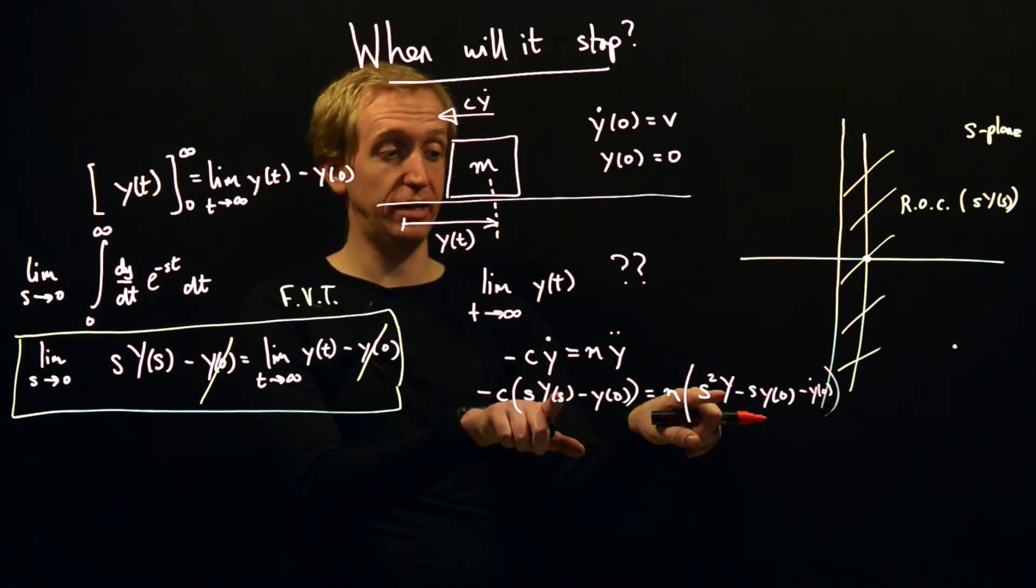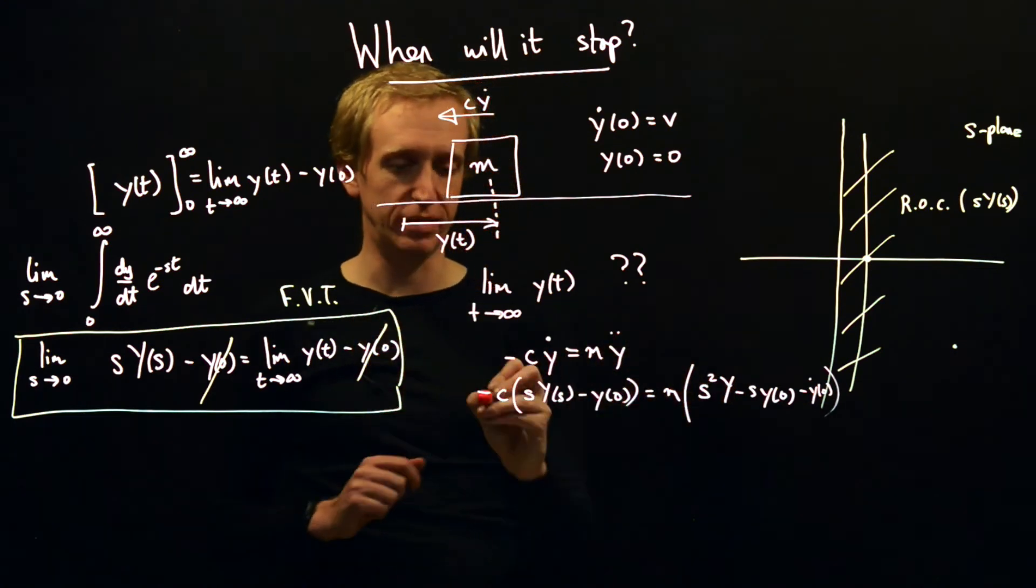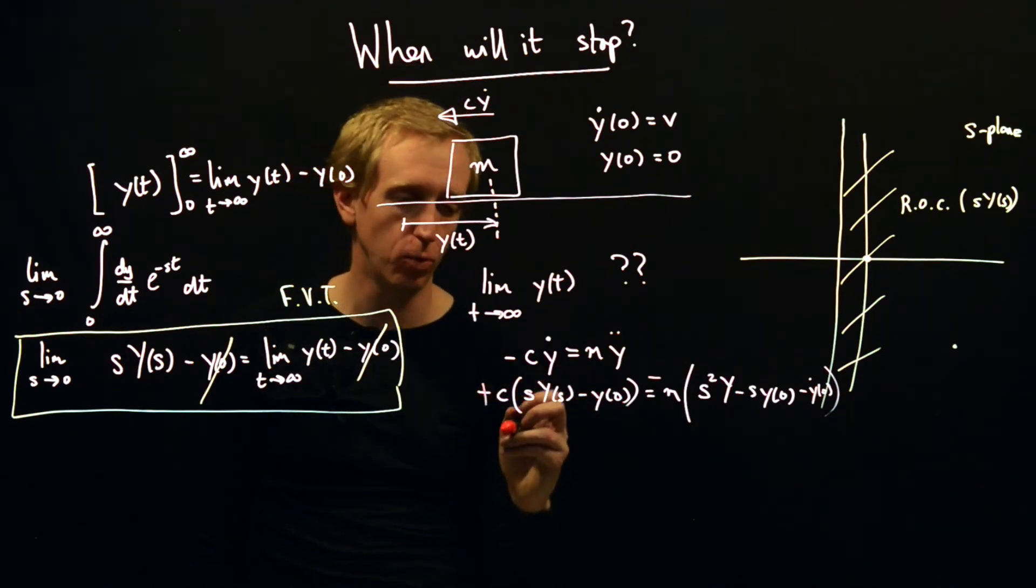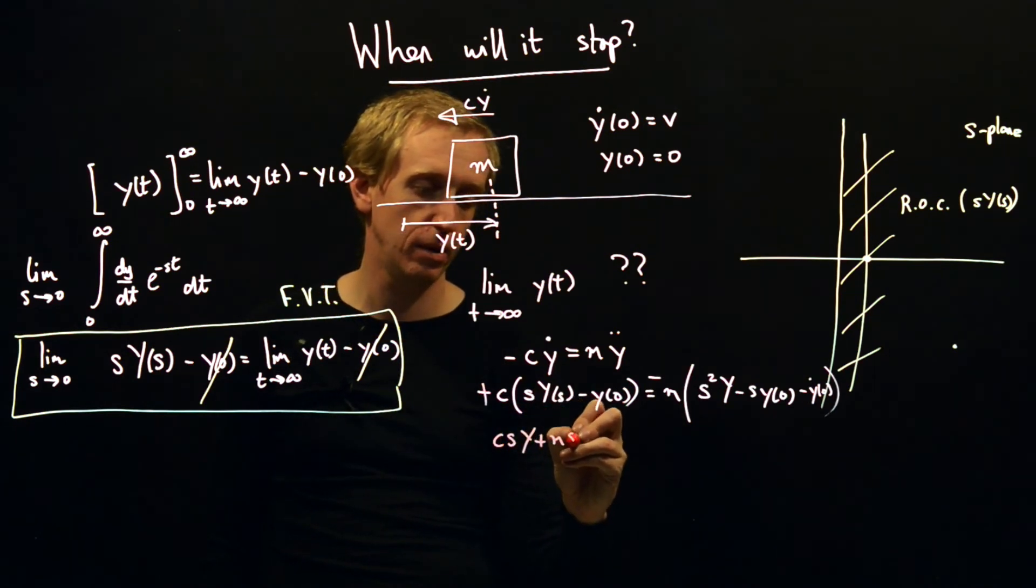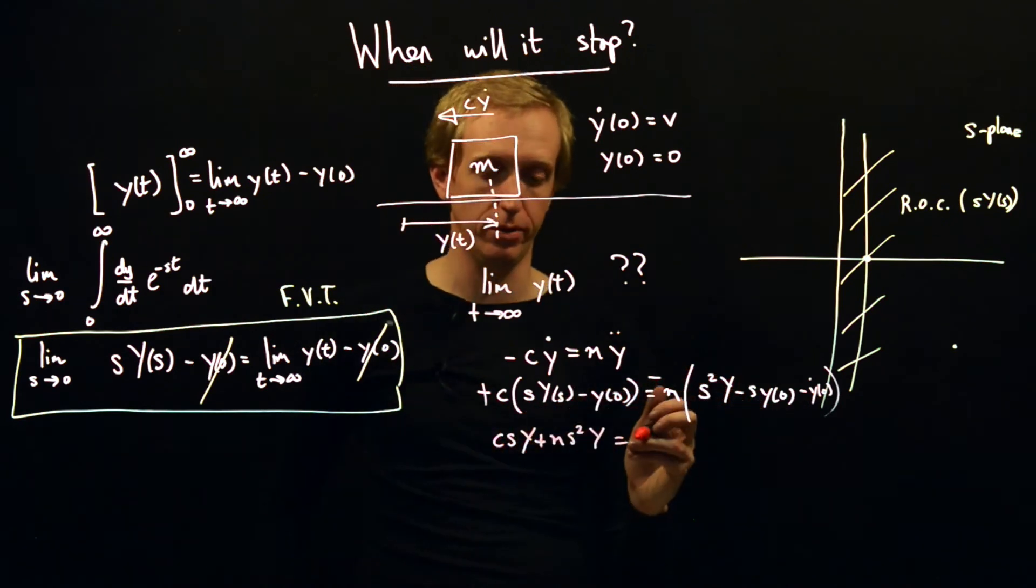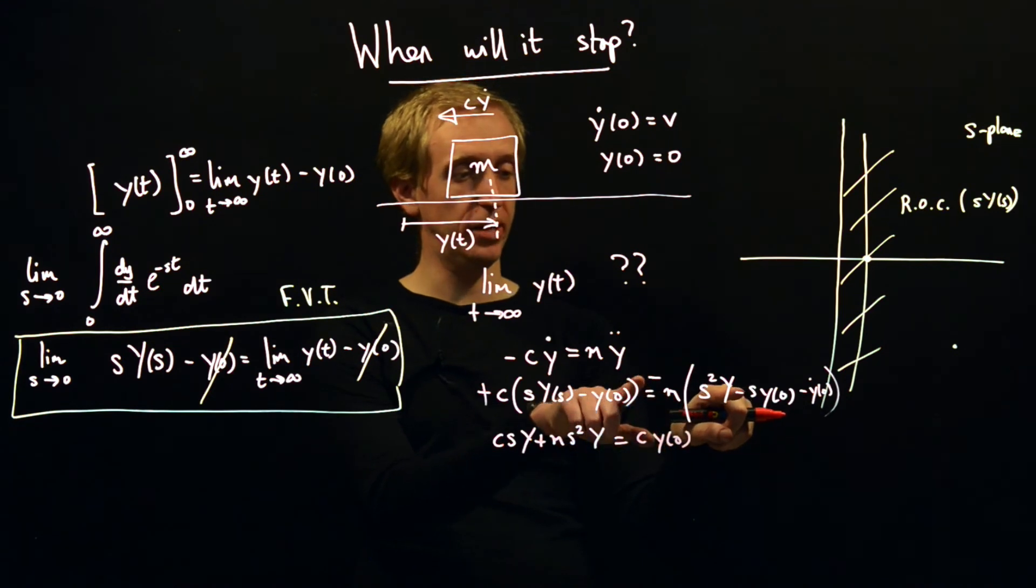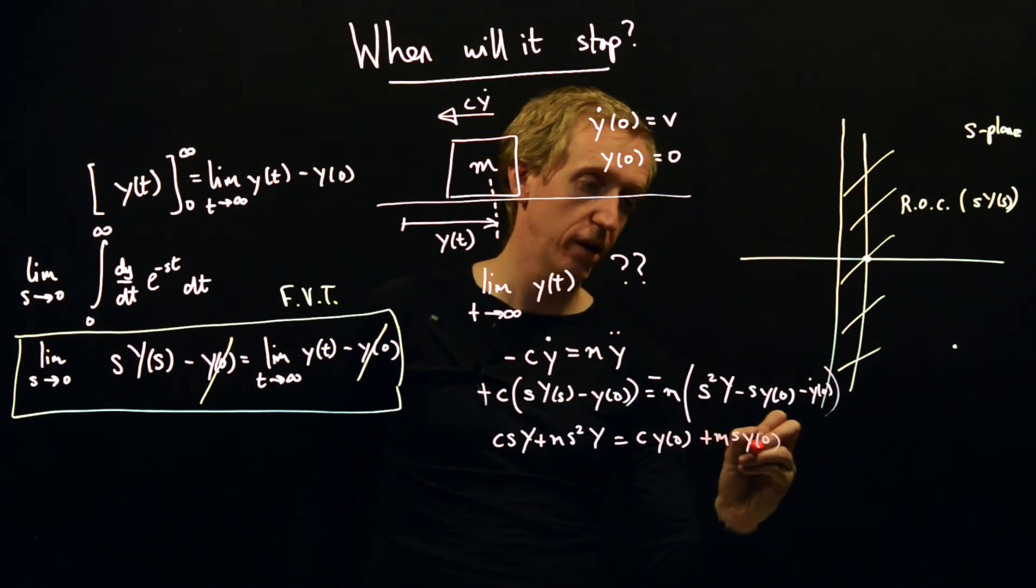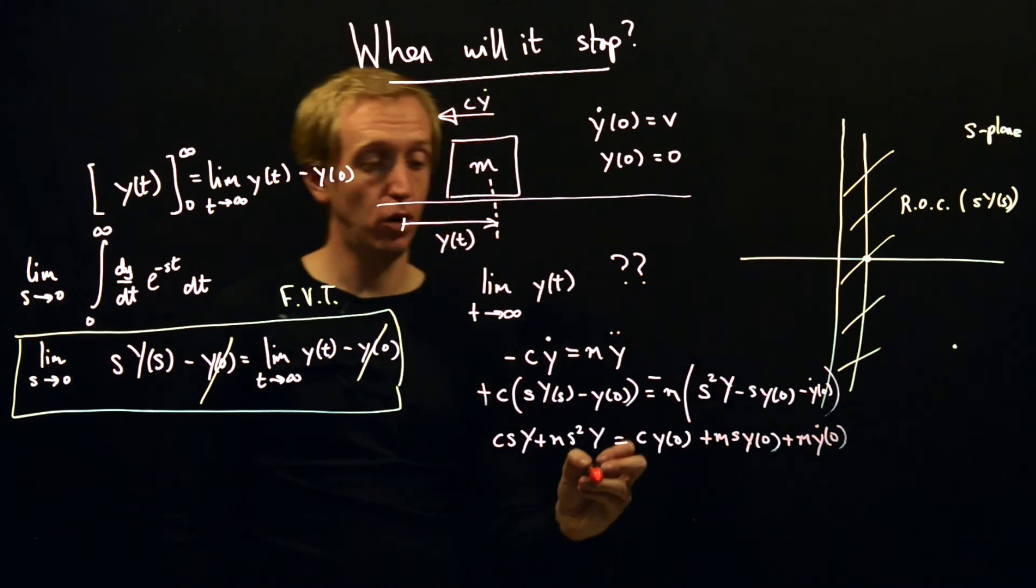And now we're almost there. Let's just collect together the things that depend on y and put them on the left hand side and move everything else over to the right hand side. So let's flip some minus signs here to help us. So what do we get? We get c*s*y, so that's that term, plus m*s^2*y, that's that term there. And this is equal to, so let's move this one over, so we have a c*y of zero, and then we've got these minus signs cancel out, so we've got a plus m*s*y of zero, and then we have a plus m*y dot of zero.